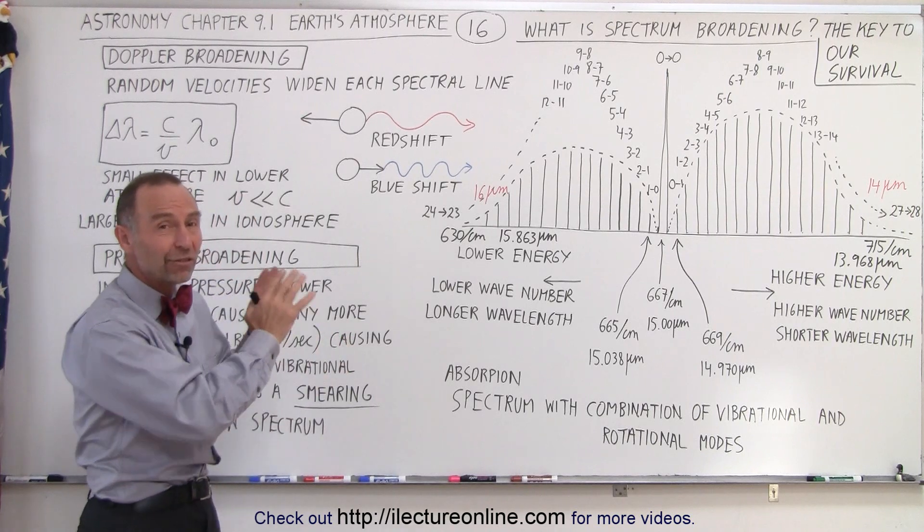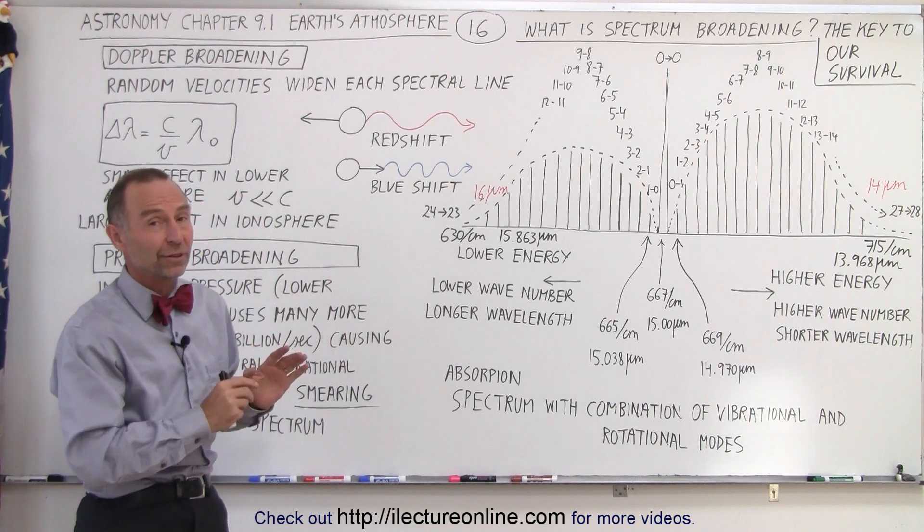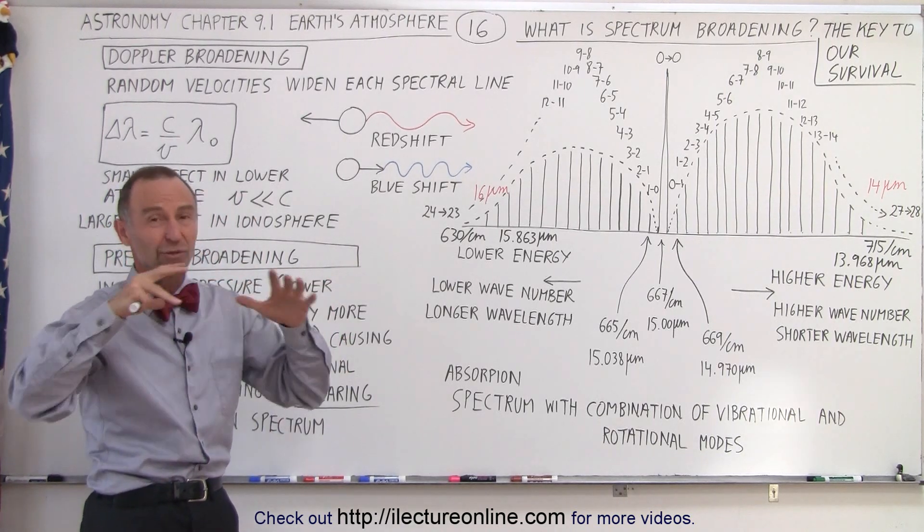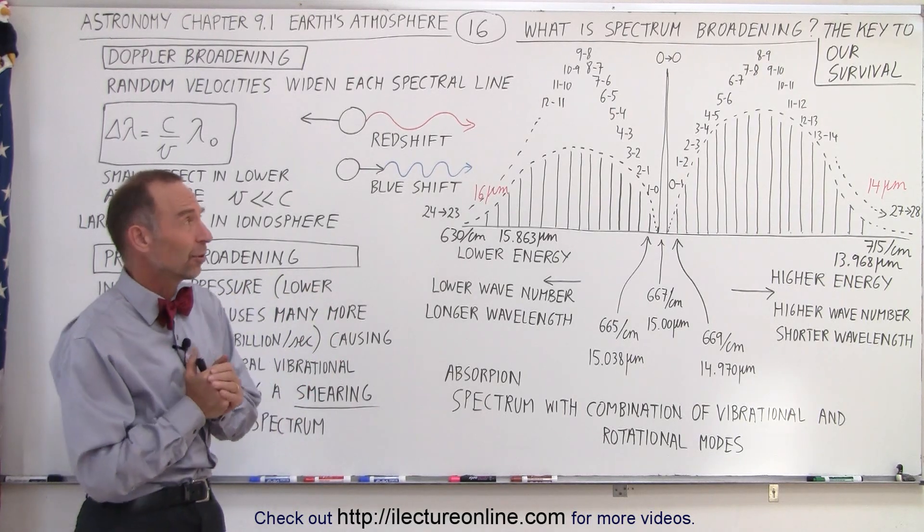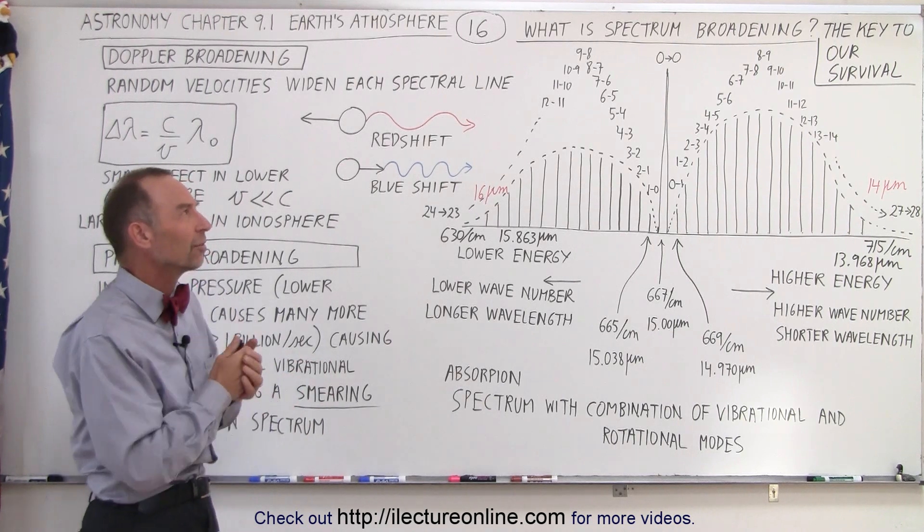It turns out, if it wasn't for this fact here, what's happening in the atmosphere, the earth simply would be a big snowball and our survival on the earth would be very tenuous at best. So what am I talking about? What is this?